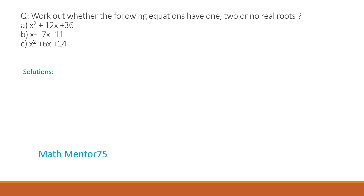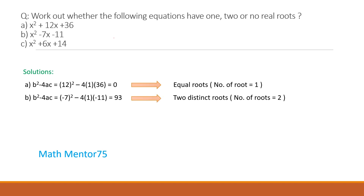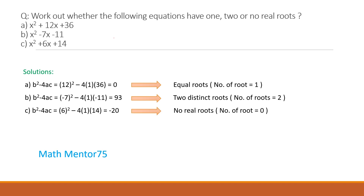Now let's do some examples: work out whether the following equations have one root, two roots, or no roots. For the first part, we apply the discriminant — the answer is zero, so we have one root. For the second example, the discriminant value is 93, which shows two distinct roots. For part c, the discriminant is negative, meaning no real root.